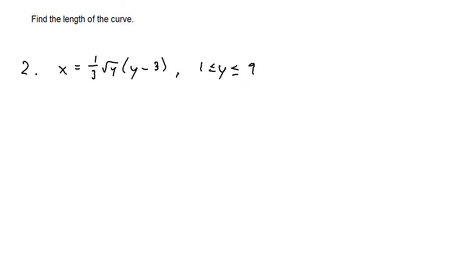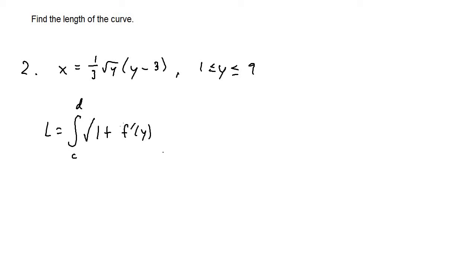For number 2, we have x equals 1 third times the square root of y times (y minus 3), with y bounds from 1 to 9. Since our equation is in terms of y with y bounds, we use the arc length formula: L equals the integral from c to d of the square root of 1 plus f prime of y squared, times dy.